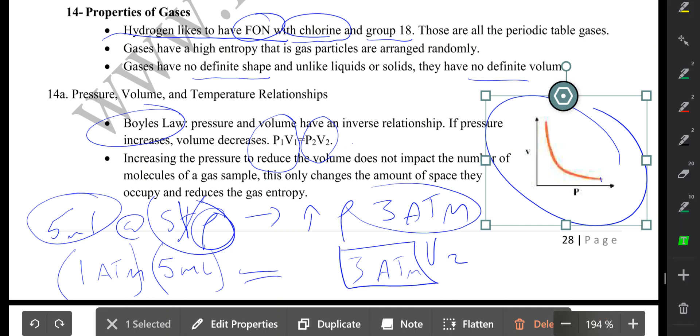Simply just perform the calculations here, and you'll get 5 equals 3 V2, divide both sides by 3, and your volume would be 5 over 3. Your final volume would be 5 over 3 milliliters.